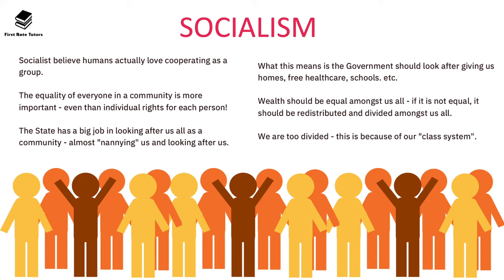The final key ideology is socialism. Socialists believe humans actually love cooperating as a group — going back to fundamental beliefs about human nature, the socialism perspective holds that we as humans love being part of a group and love cooperation. From a socialist perspective, equality is key, and the equality of everybody in the community is more important even than individual rights for each person. This is where socialists and liberals would clash.